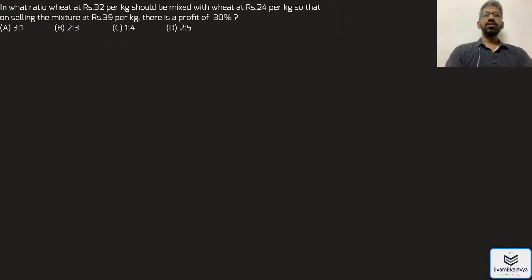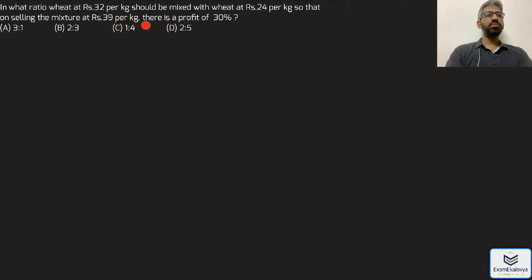Next question: In what ratio should wheat at 32 rupees per kg be mixed with wheat at 24 rupees per kg so that on selling the mixture at 39 rupees per kg there is a profit of 30 percent?